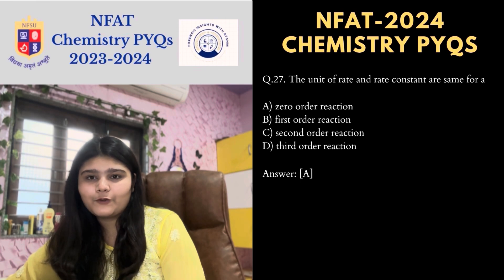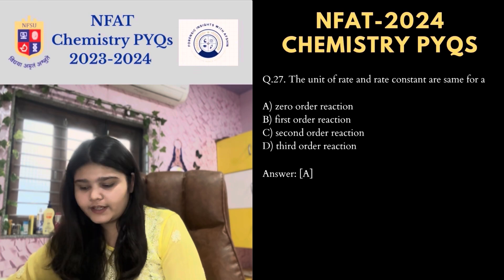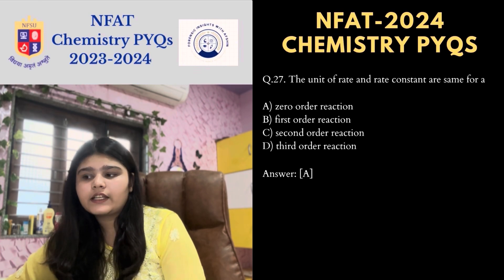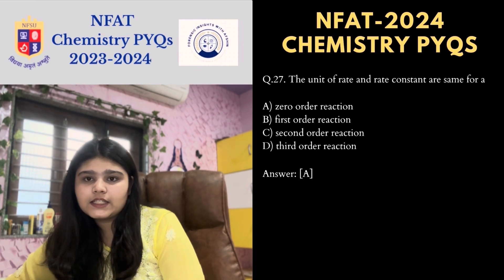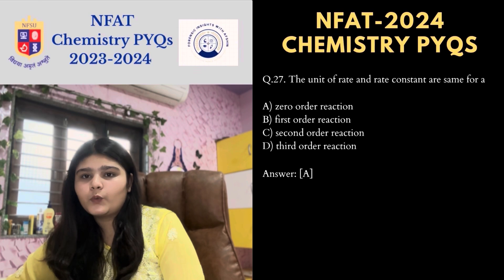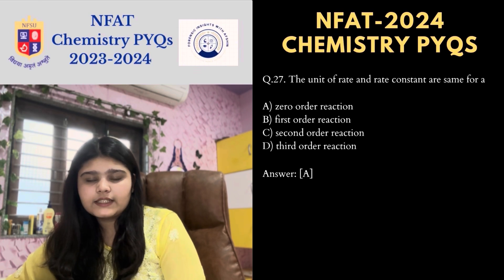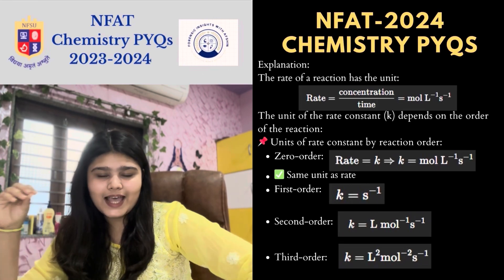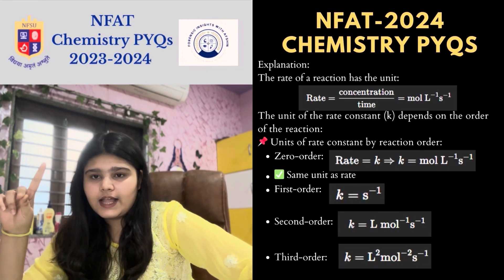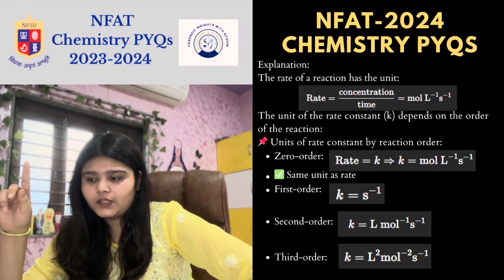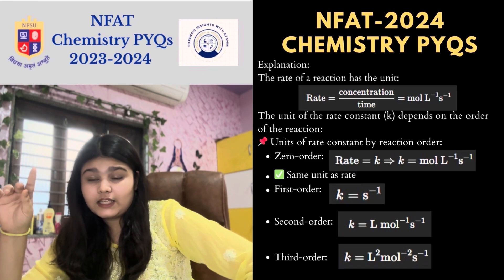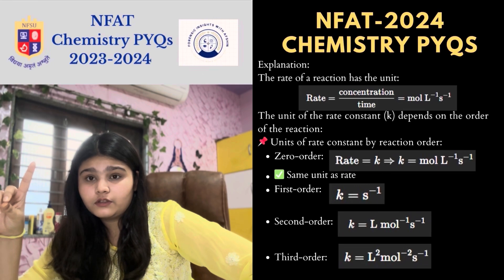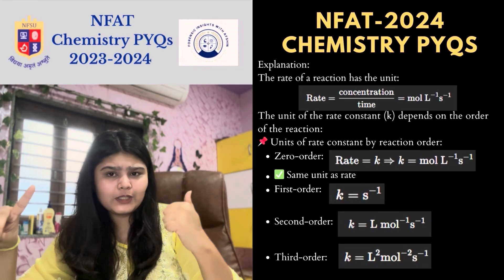Next MCQ: the unit of rate and rate constant are the same for a zero order reaction. The rate of a reaction has units of mol·L⁻¹·s⁻¹, which is the same as the rate constant for zero order. For first order, k = s⁻¹; for second order, k = L·mol⁻¹·s⁻¹; and for third order, k = L²·mol⁻²·s⁻¹.